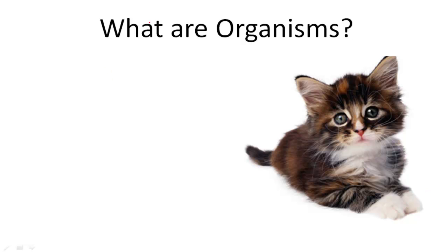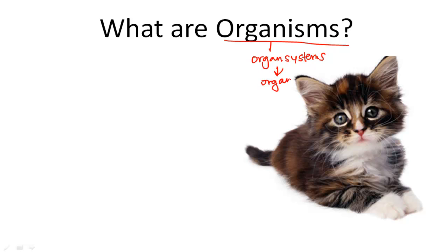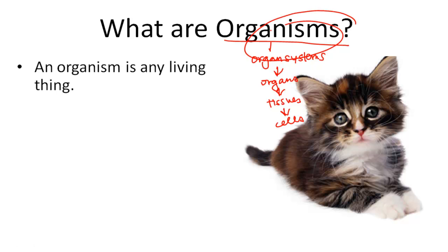Lastly, in our organizational chart, we have organisms. You'll remember, organisms are made up of organ systems, which are made up of organs, which are made up of tissues, which are made up of cells. But what is an organism? An organism is just any living thing.